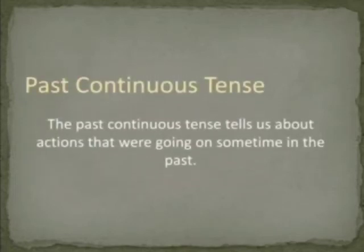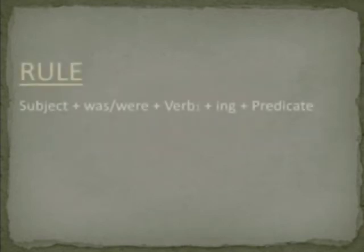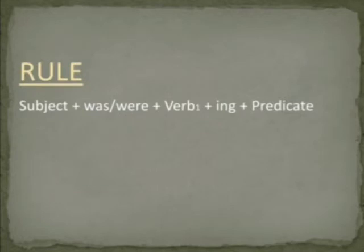Next is past continuous tense. The past continuous tense tells us about actions that were going on sometime in the past. The rule of past continuous tense is: subject plus was/were plus verb one plus -ing plus predicate.